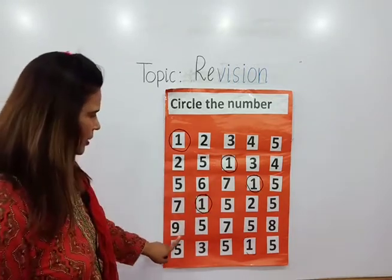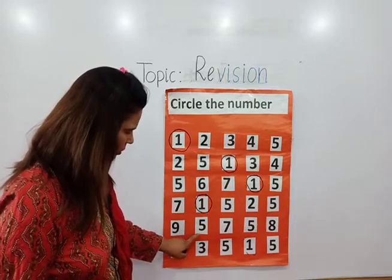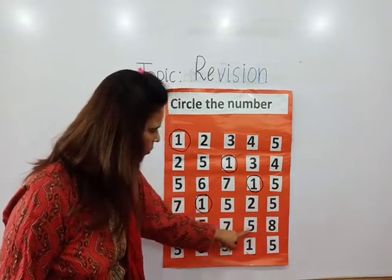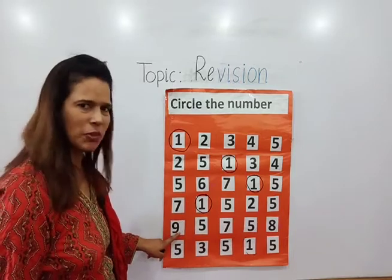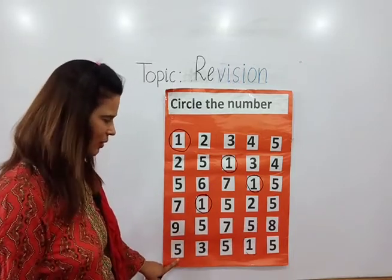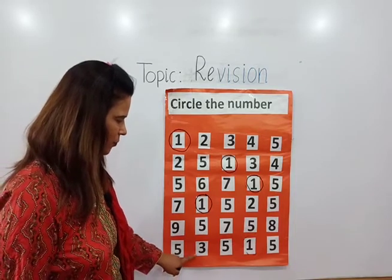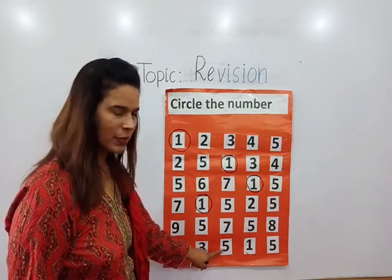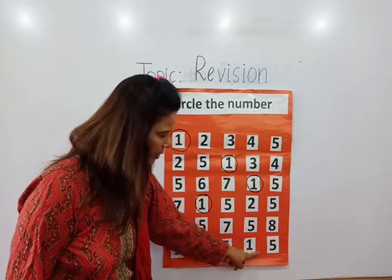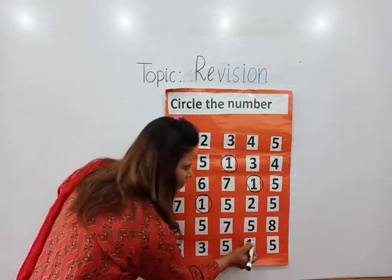Now here is the fifth line — is there any number one here? No, there is no number one. Now the last line — find out number one. Where is number one? This is number one, okay, now circle it.